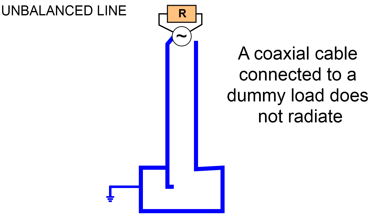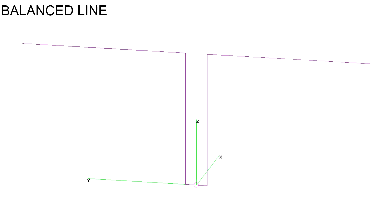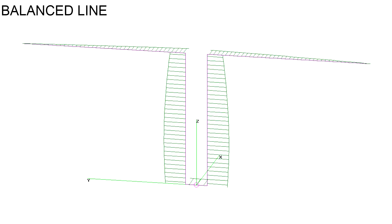This explains why a coaxial cable connected to a dummy load does not radiate. In this picture, we see a symmetric dipole fed by a balanced line. Everything this side tries to do to disrupt the field on this wire, it is compensated by the same action done by the other wire. The fields on these wires cancel each other and the transmission line does not radiate.